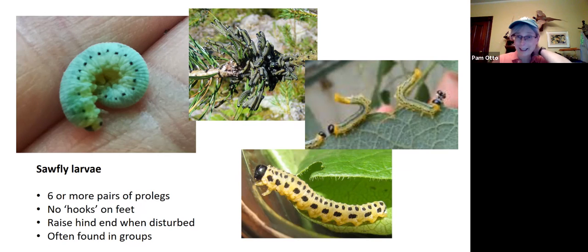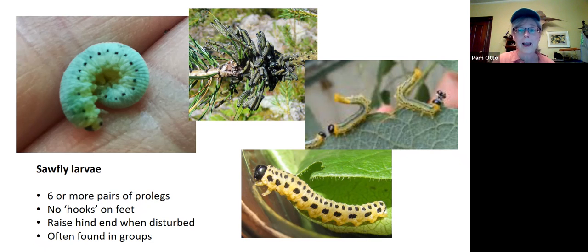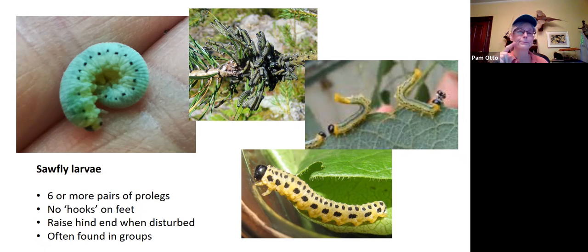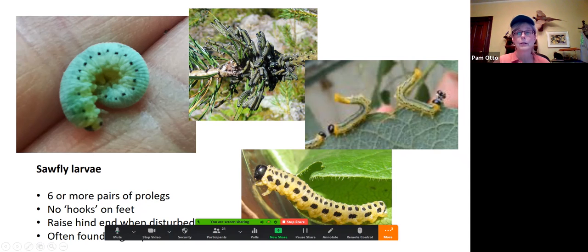Sawflies look for all the world like caterpillars. If you're getting that vibe that it's a caterpillar but it's not quite right, look at the prolegs — a sawfly is going to have six or more pairs. On this one: one, two, three, four, five, six, seven. And on this one on an elderberry in my backyard last year, I counted seven pairs as well.